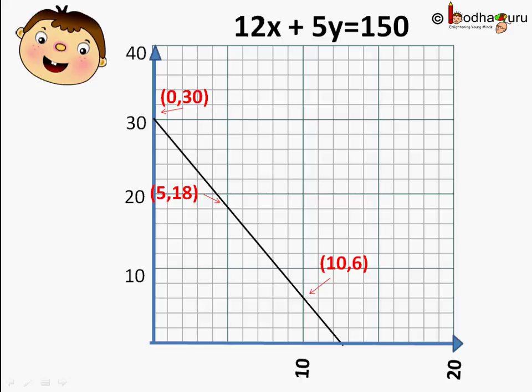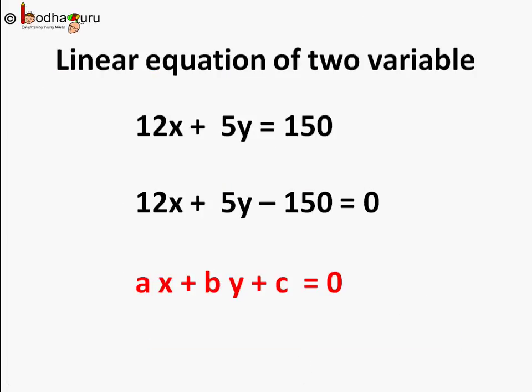If you take any point on this line its coordinates that is X and Y values would satisfy the equation. Means we can get value of X for any Y or value of Y for any X from this graph. So linear equation of two variables have multiple solutions and it can be represented on a graph paper by a straight line. So 12X plus 5Y equal to 150 can be written as 12X plus 5Y minus 150 equal to 0.